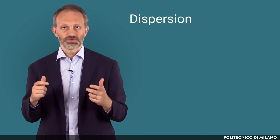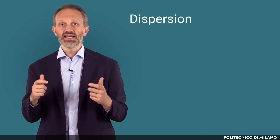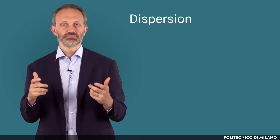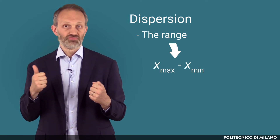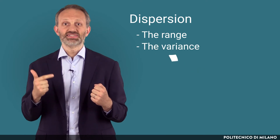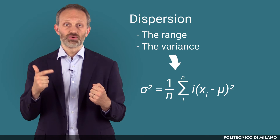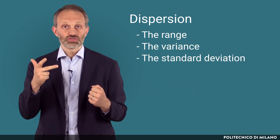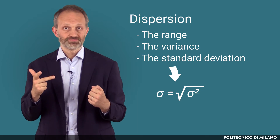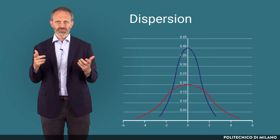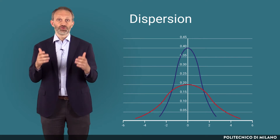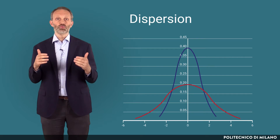Other fundamental descriptive statistics are the measures of dispersion, which tell us how much the data are scattered far away from the mean. The usual measures are: the range, that is, the difference between the maximum and the minimum value; the variance, that is, the average square difference between each value and the mean; and the standard deviation, that is, the square root of the variance. In the figure, we can see an example of two different variables — they have the same mean, but the red line is more dispersed than the blue one. Indeed, the red has a standard deviation that is twice the one of the blue.